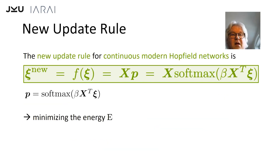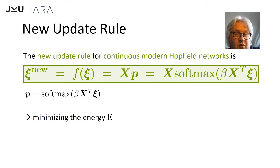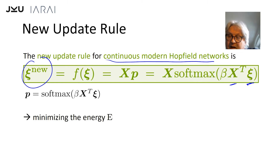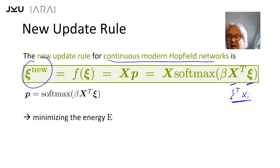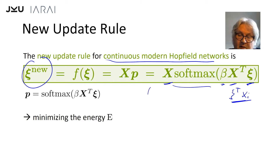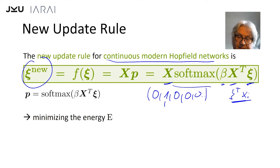Some constants only ensure that the energy is lower-bounded by zero and upper-bounded. The new energy function comes with a new update rule for continuous modern Hopfield networks. The new state pattern is the stored pattern matrix X times the softmax applied to β times the vector of dot products between the old state pattern ξ and all stored patterns X. It's like an averaging over the stored patterns — if the softmax is zero-one-zero-zero you retrieve only pattern number two, but if the softmax has other values you get some average of all stored patterns.